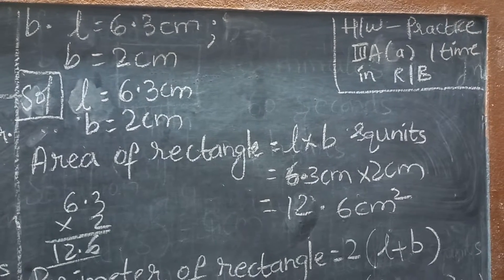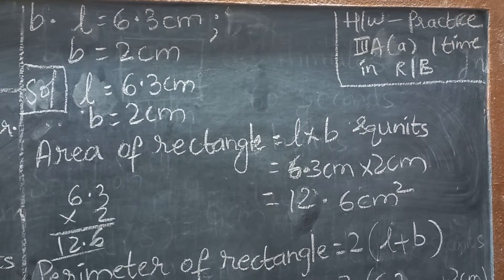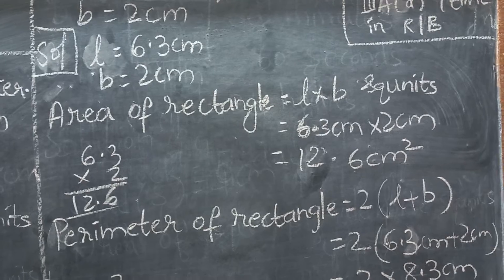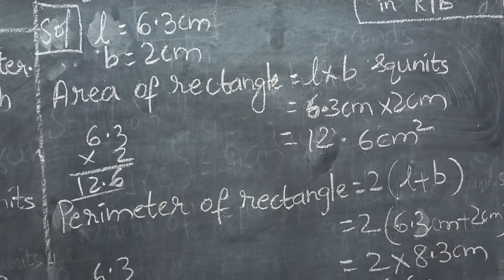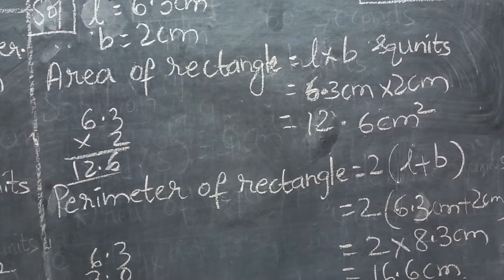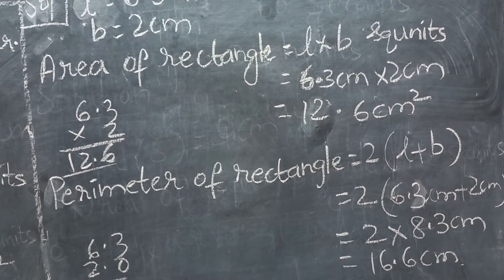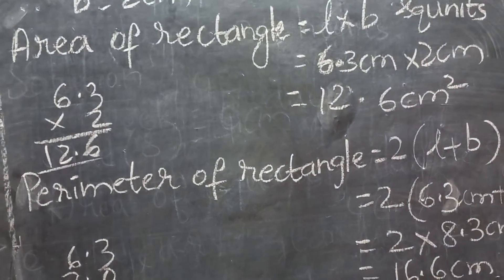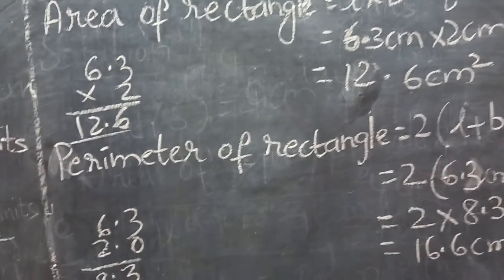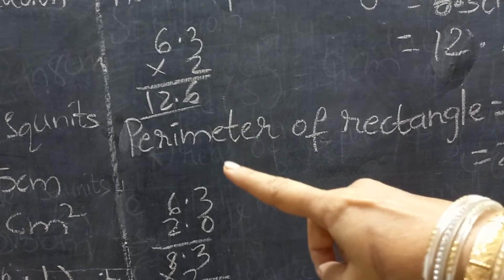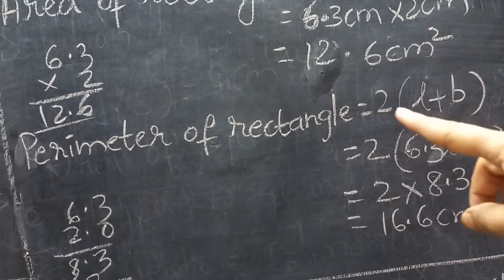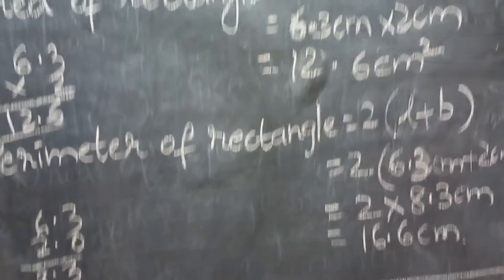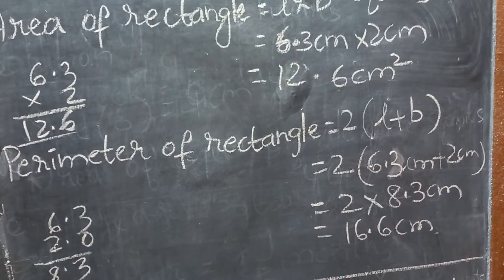Now for part B: L value is 6.3 centimeters, B value is 2 centimeters. We have L and B values, so we substitute and can find the area easily. Area of rectangle formula is L into B square units. I substituted L as 6.3 centimeters and B as 2 centimeters. Two threes are six, two sixes are twelve — decimal after one digit — so area is 12.6 centimeters square.